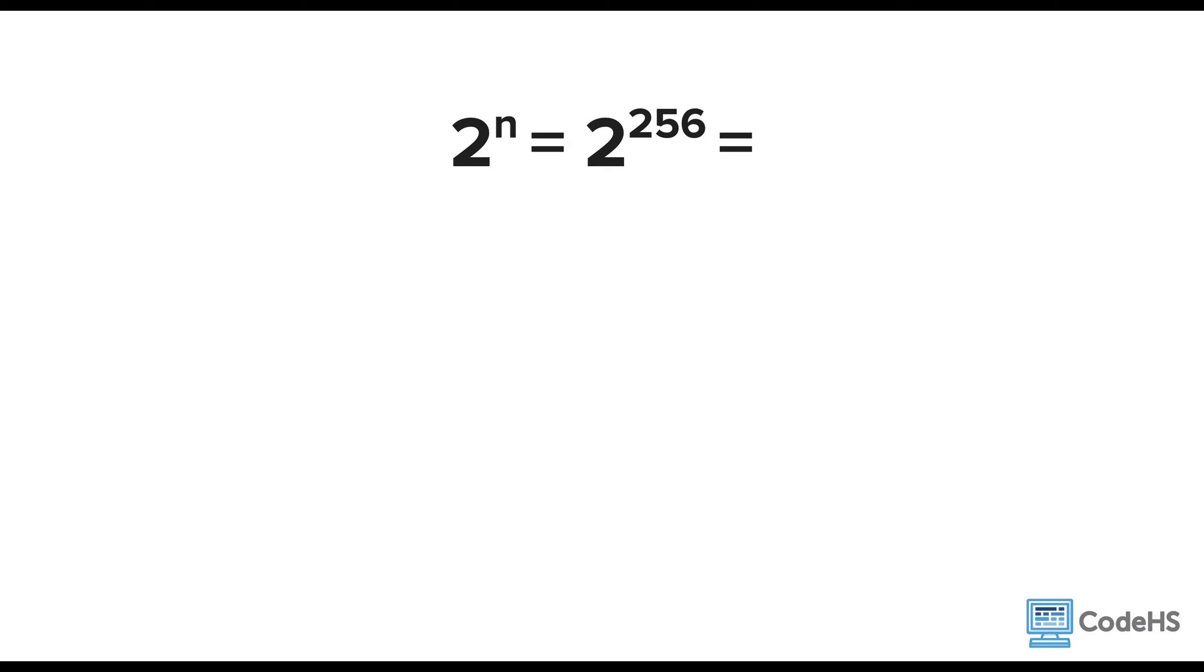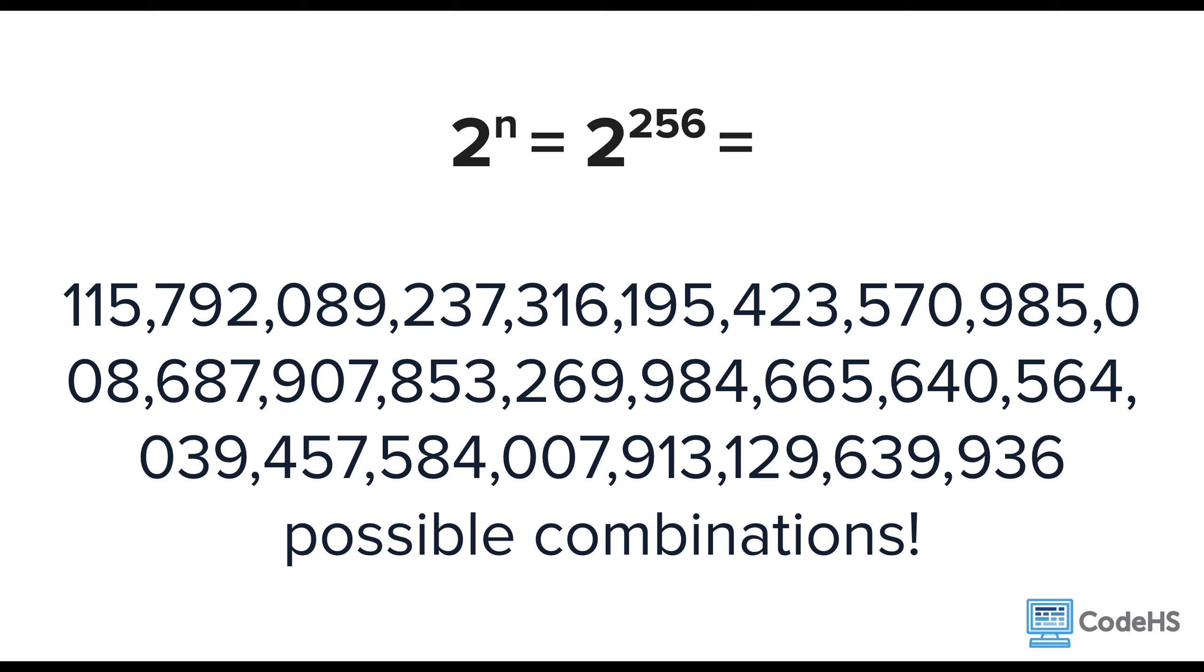So how many possibilities do you suppose a 256-bit key has? Well, this many possible combinations. And I'm not going to try to read that out. It's a lot of commas. There are also stronger encryption algorithms that use a key length up to 4,000 bits. So you can imagine how much bigger this number would be for those keys.